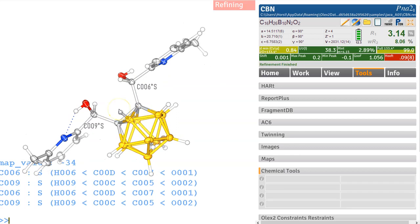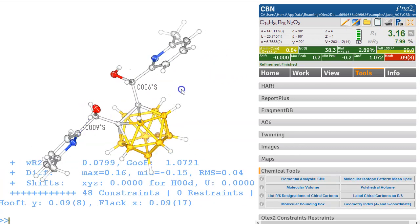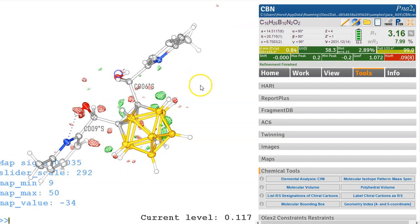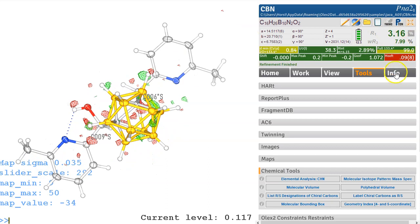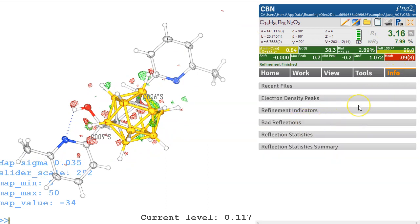So I suspect we're done here. 0.16 percent. It's looking quite good. There is hardly any residuals. So I think we just the last check at bad reflections, there's nothing here. I think we are pretty much done with this structure. Thanks for using Olex2.